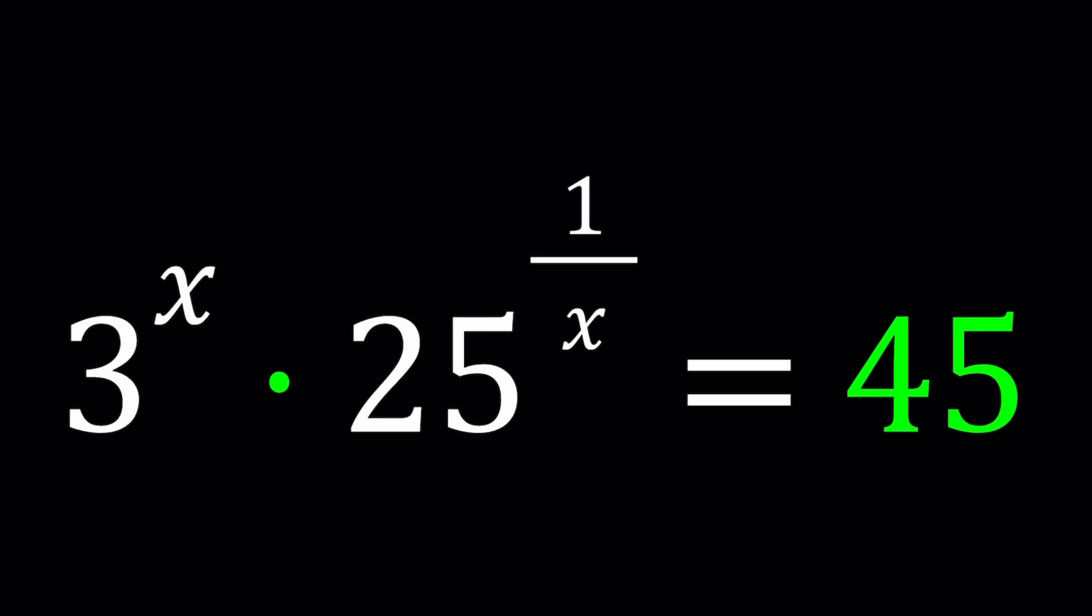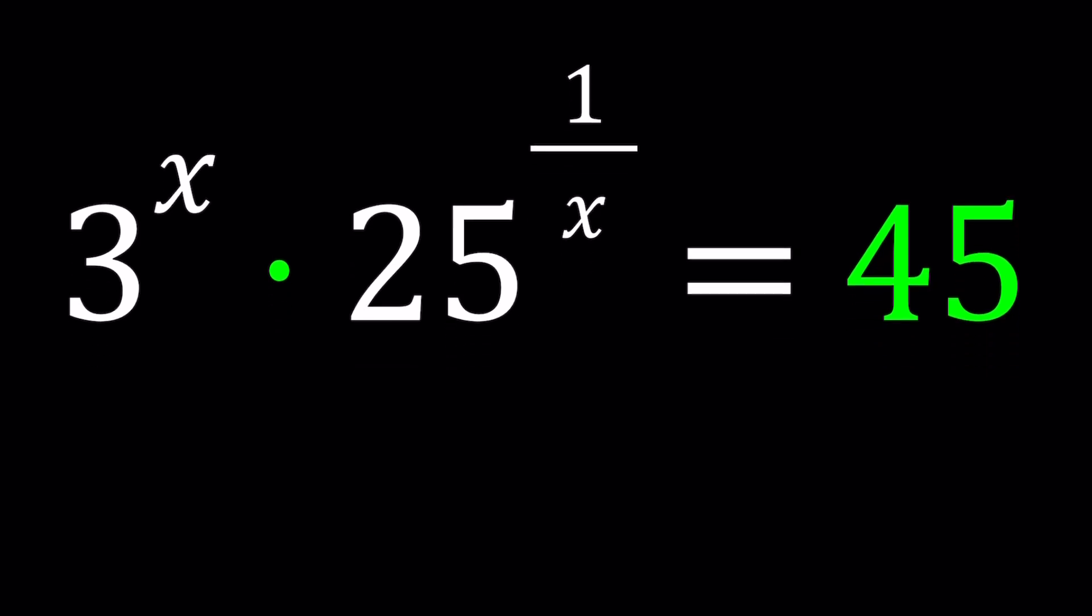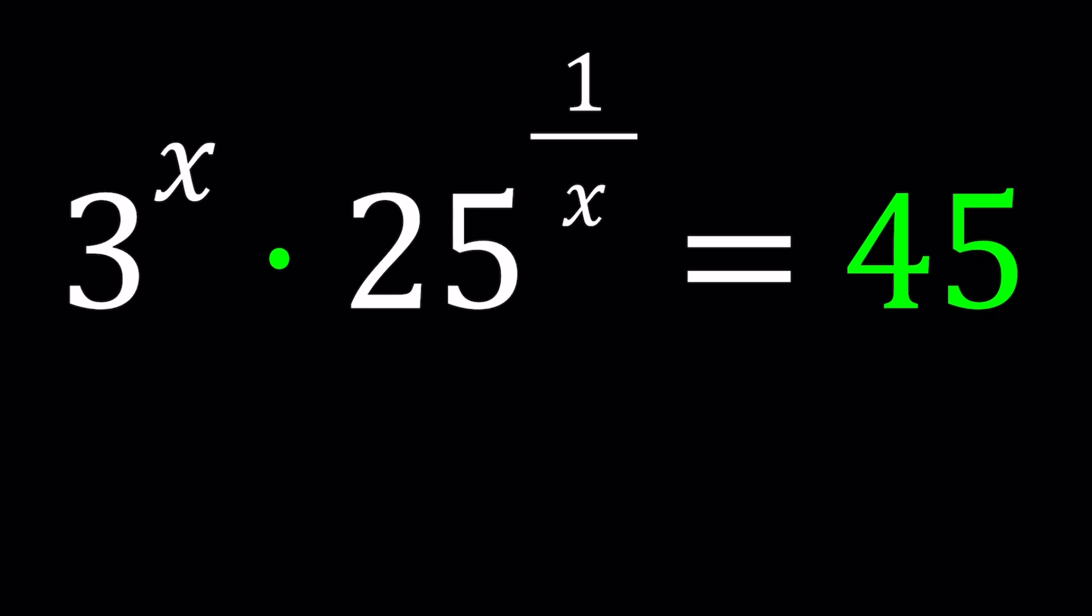Hello everyone. In this video, we're going to be solving a very interesting exponential equation. We have 3 to the power x times 25 to the power 1 over x equals 45. And we're going to be solving for x values. Let's go ahead and take a look. We're going to be looking at a couple different solutions here or methods.